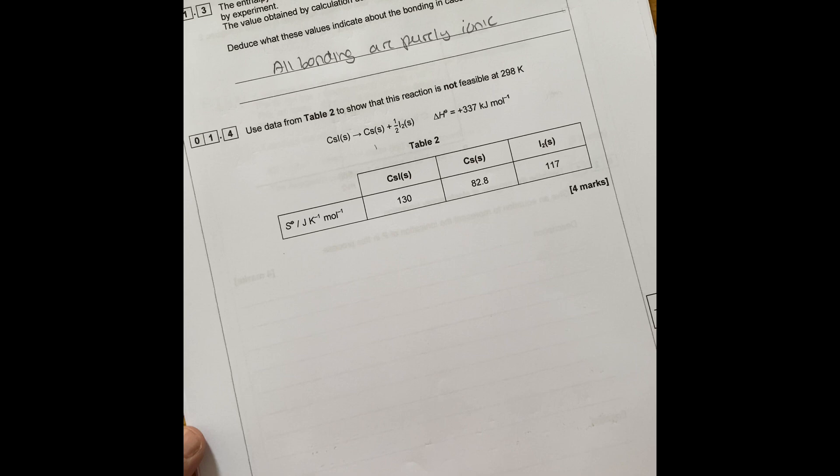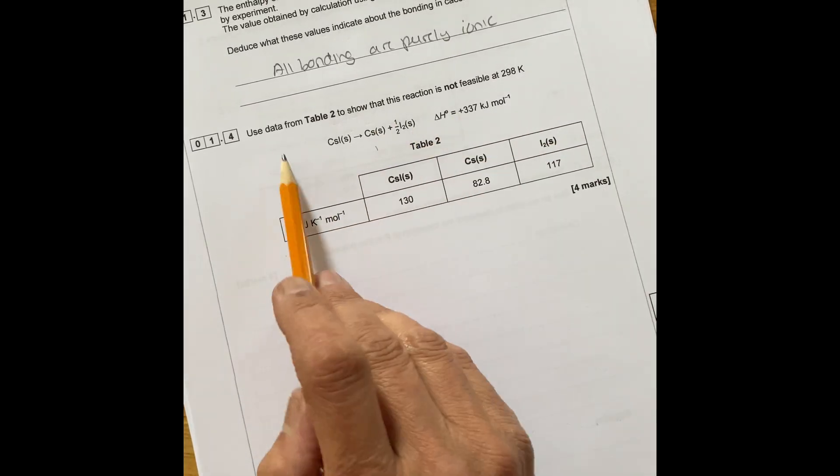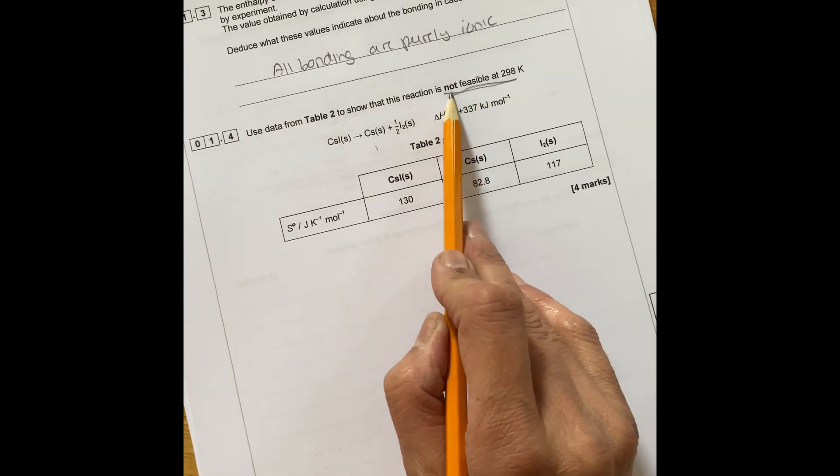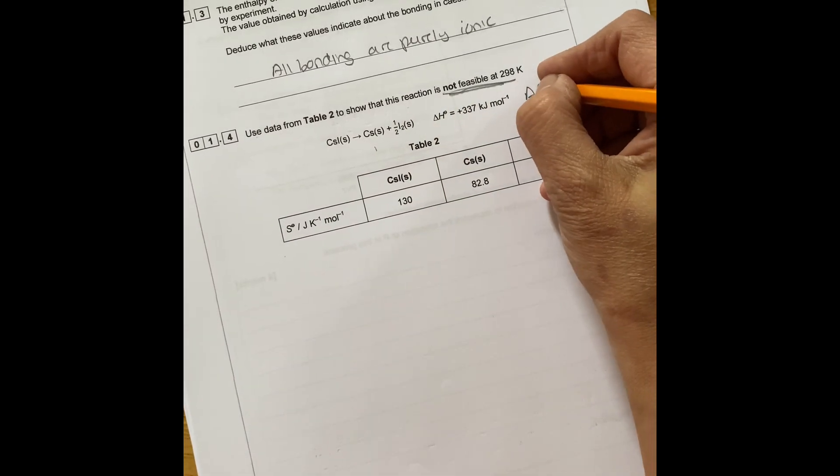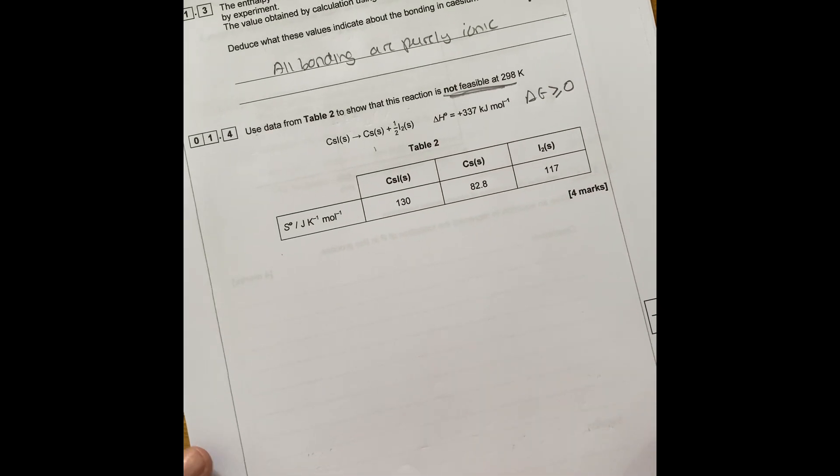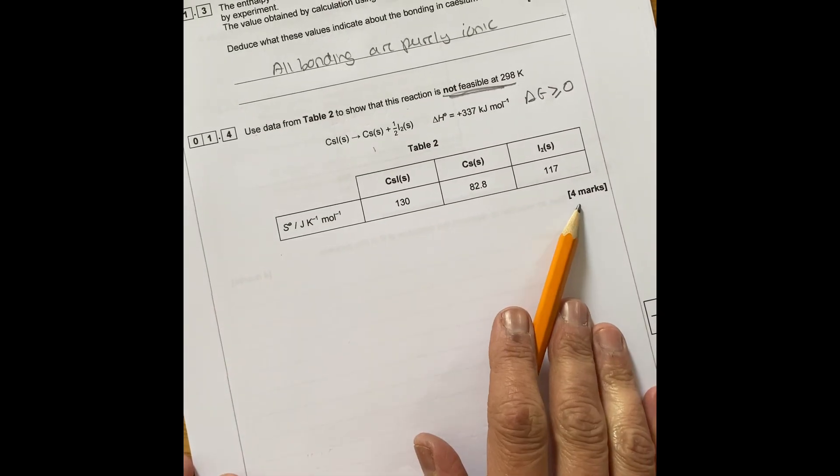Next one we're going to do, it says here use data from table 2 to show this reaction is not feasible. So for reaction not to be feasible, delta G has to be greater than or equal to zero.